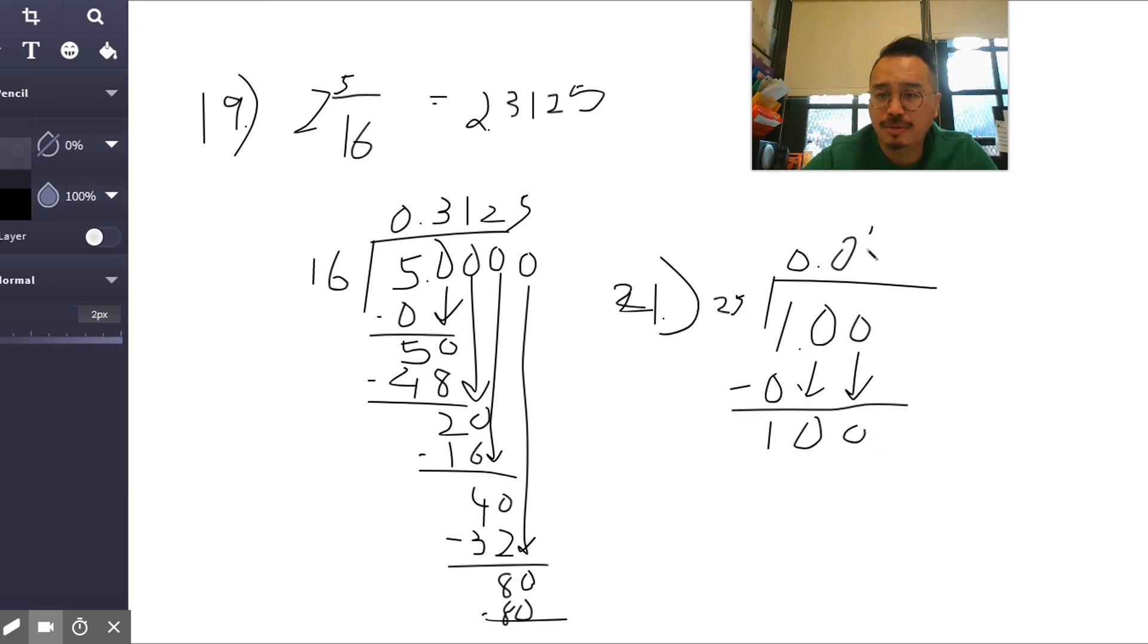25 going into 100, four times. Alright, so it's a really small number - 0.04. Okay, alright, thanks for watching Mr. Lin going over homework number 45, and have a good day.